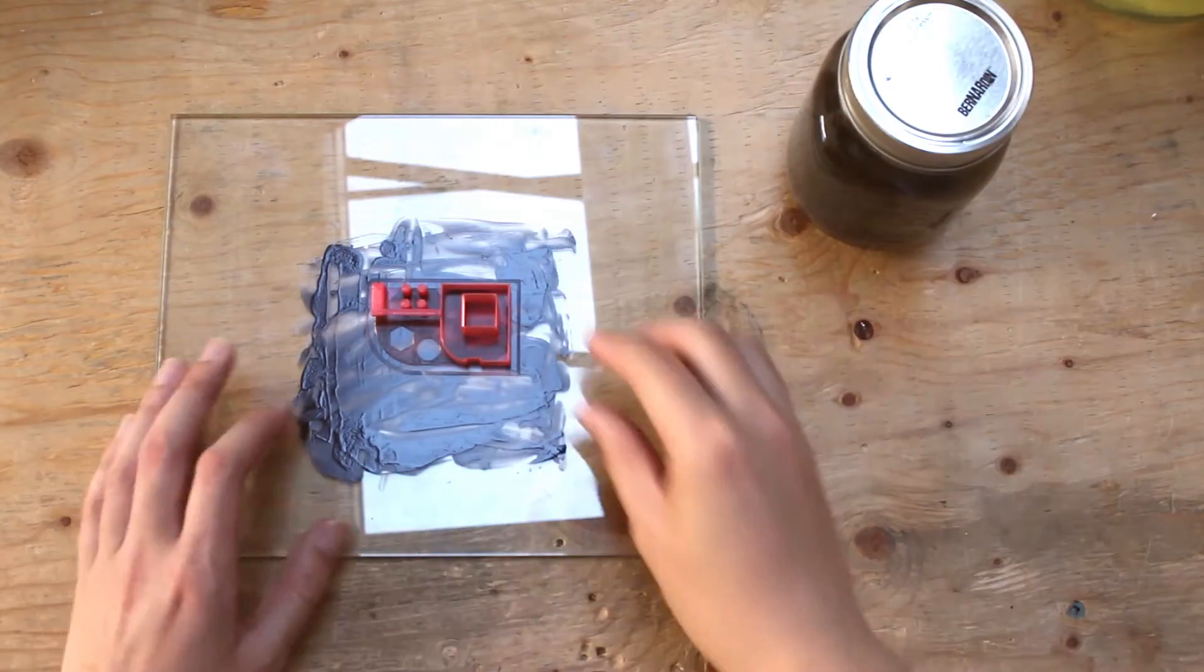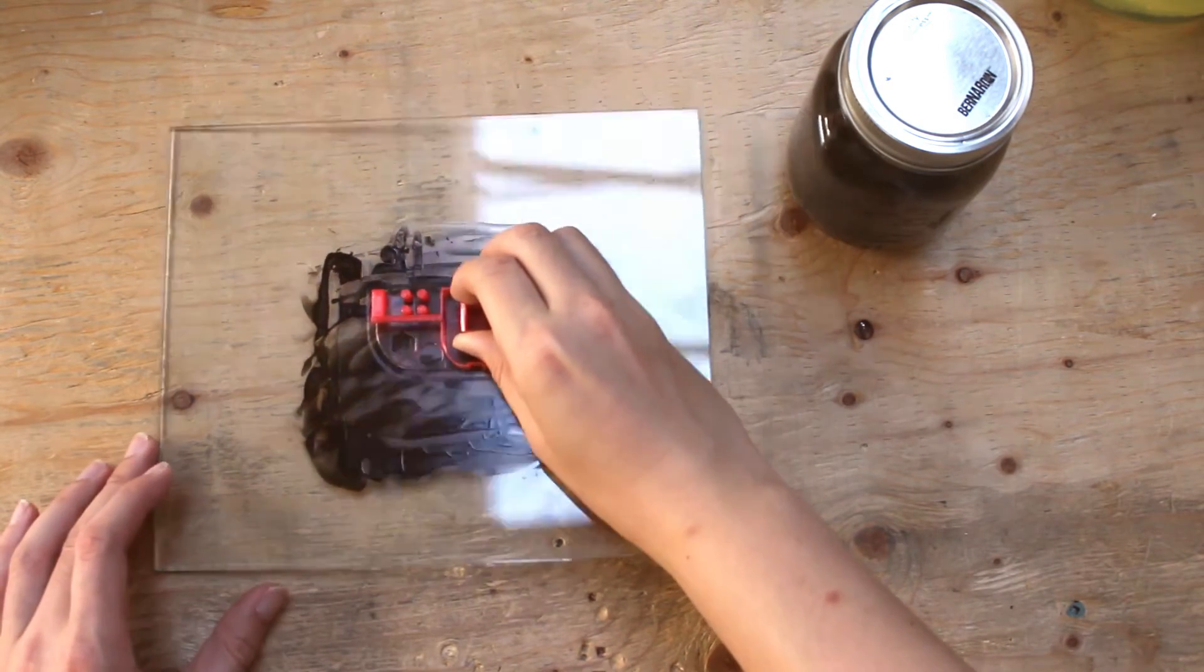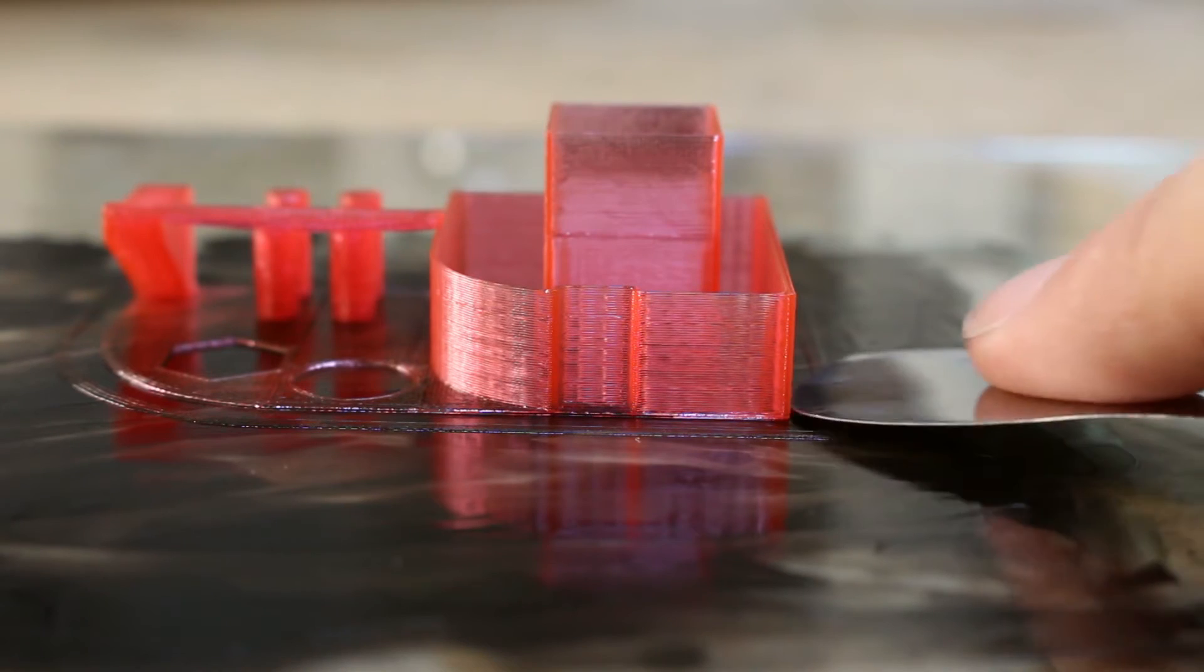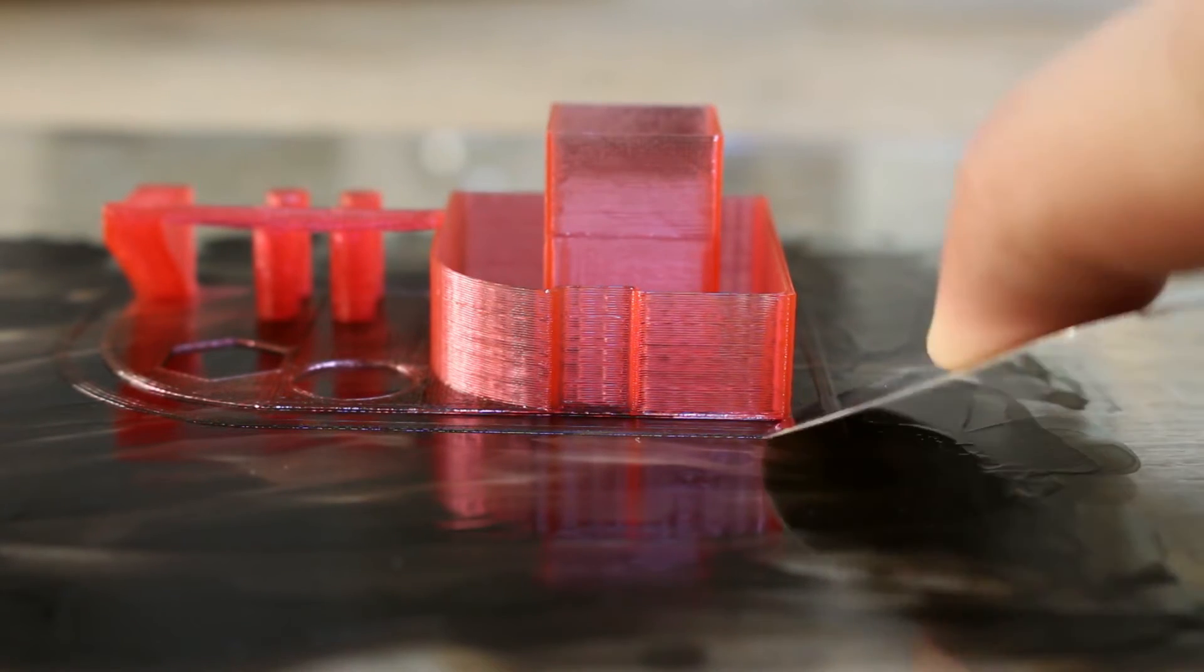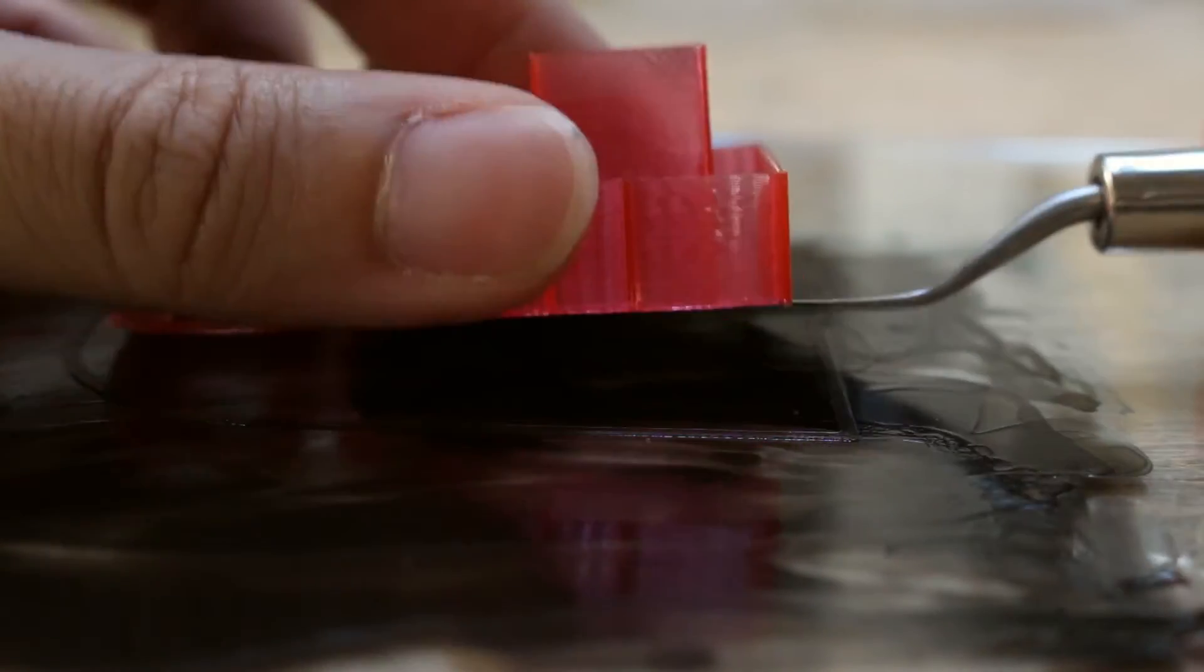The print is actually stuck on really tight. It's not coming off even when I'm pulling on it. Now let's remove the print off with a print removal knife. It comes off pretty easy despite what we just saw.